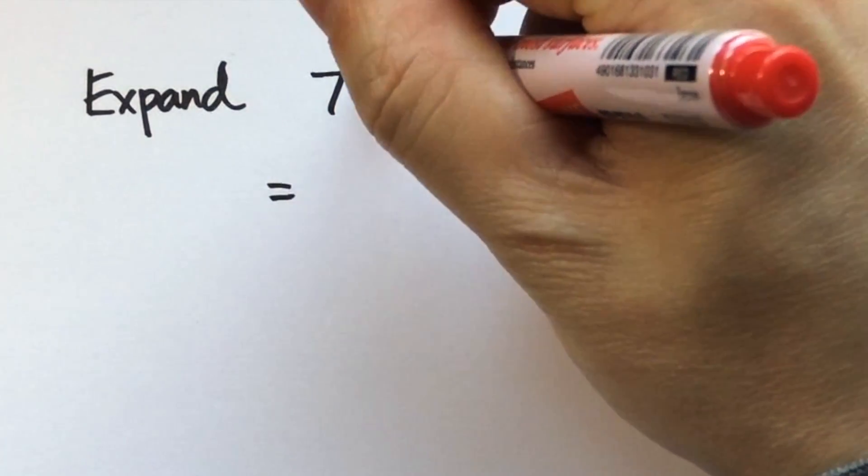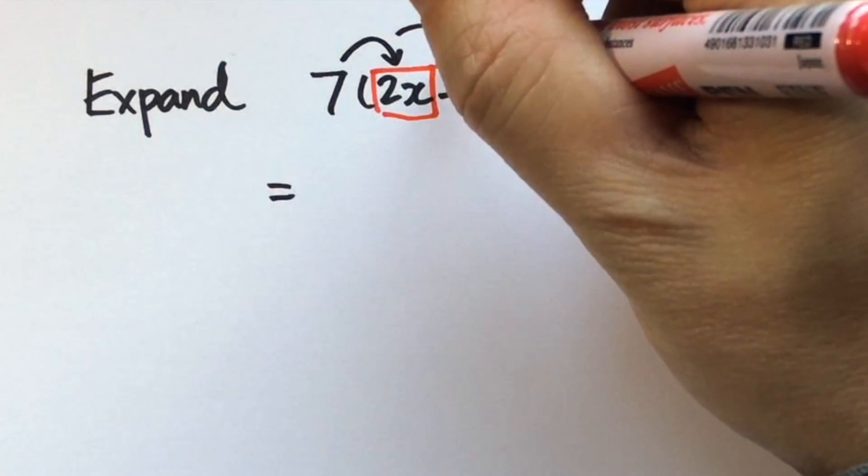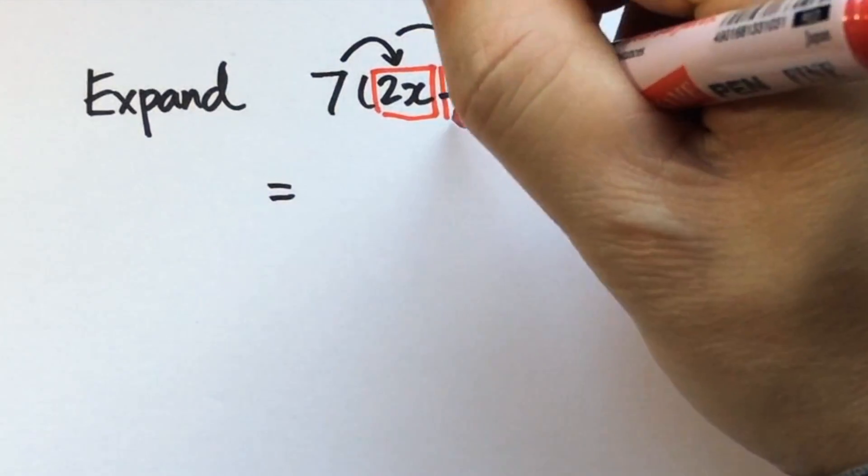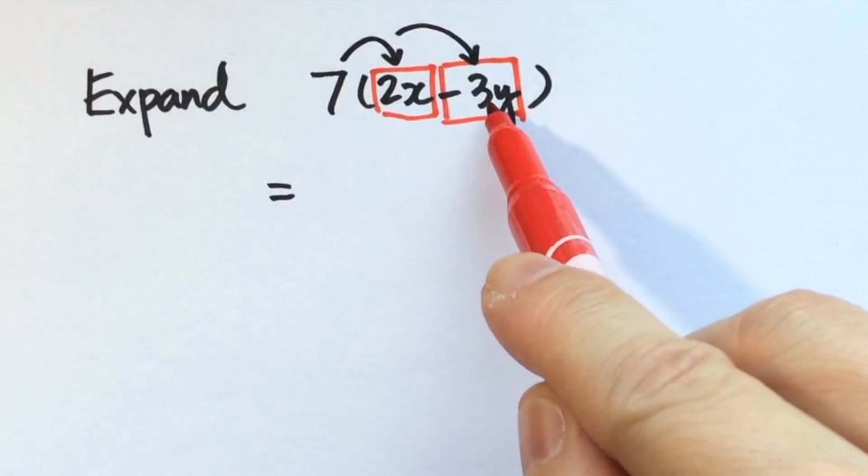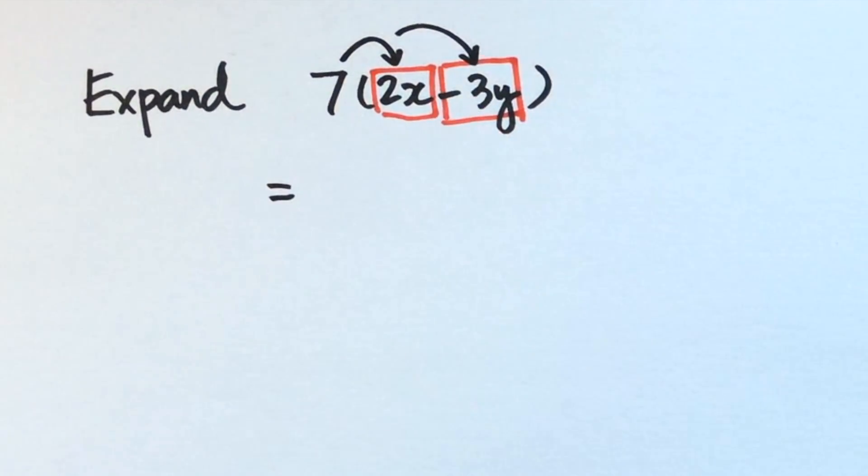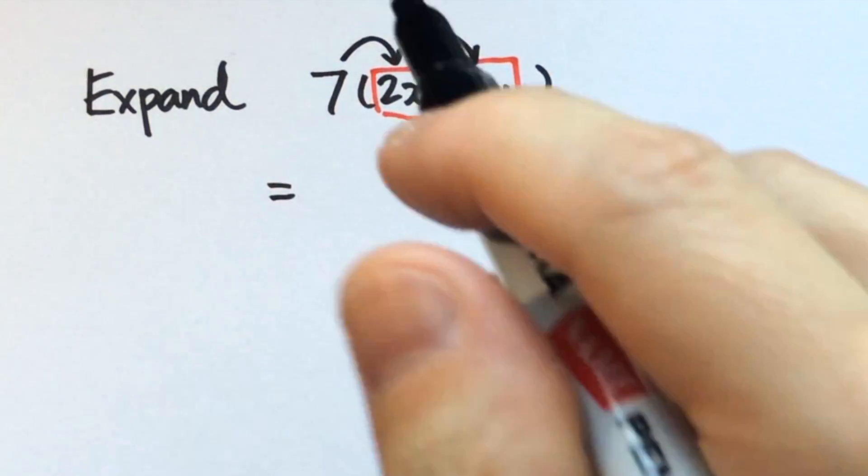Inside the bracket is 2x, and the second one will be minus 3y. This sign is always connected to the number or symbol that follows it. So if you think of 2x and minus 3y as two terms, therefore each